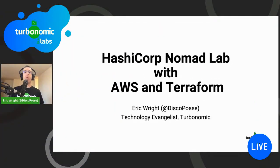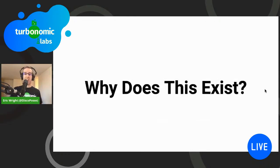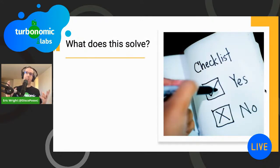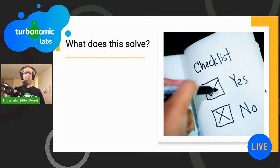Let's talk about the HashiCorp Nomad lab with AWS and Terraform. I want to give context for why you'd do this. I like to stop and 'start with why' — why would I need to do this, and why does it matter? I'm using Nomad, which is a great workload and container orchestration platform from the HashiCorp ecosystem. I actually have a Pluralsight course on it, so I've been coaching a lot of people on how to use it.